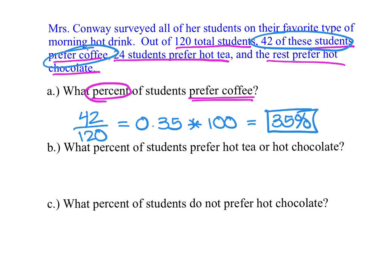The second problem says: what percent of students prefer hot tea or hot chocolate? Because of the word 'or,' I need to account for both groups. I know there are 24 students that like hot tea, but I don't know how many like hot chocolate. With 120 total students, I subtract the 42 coffee lovers and the 24 tea lovers, which leaves 54 students for hot chocolate.